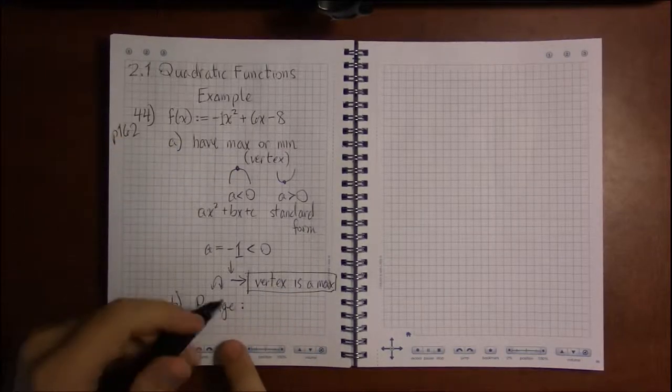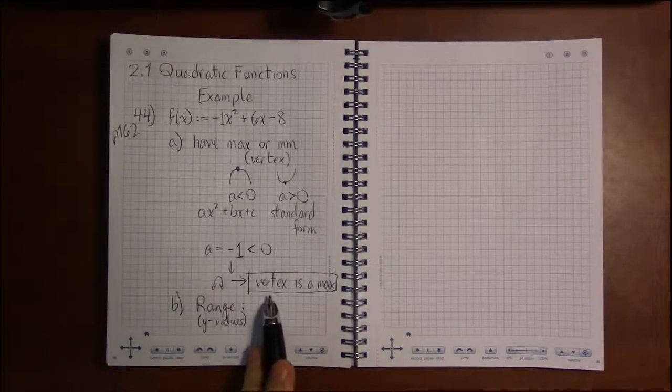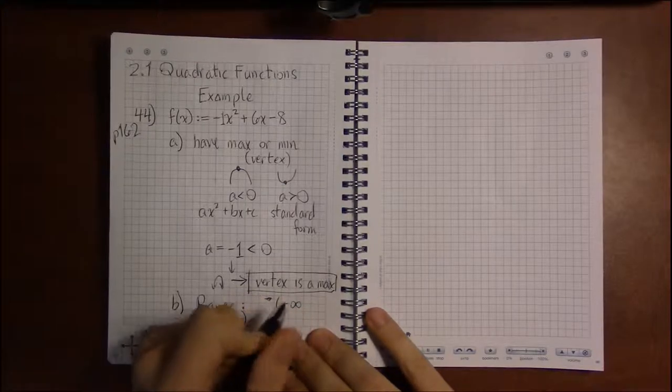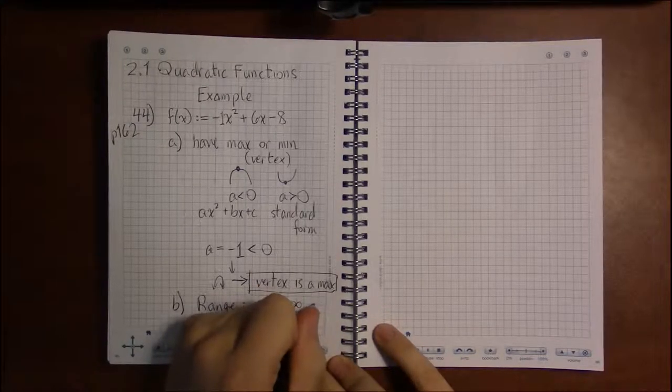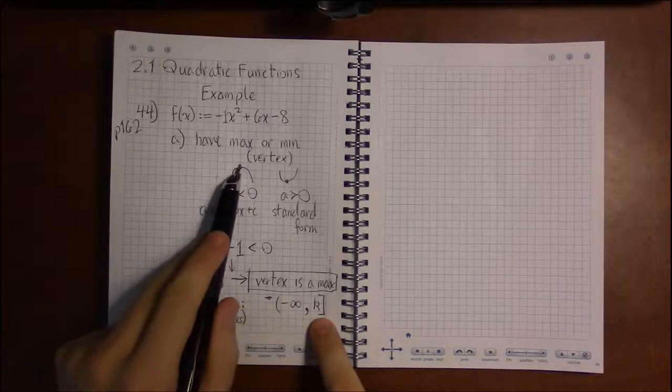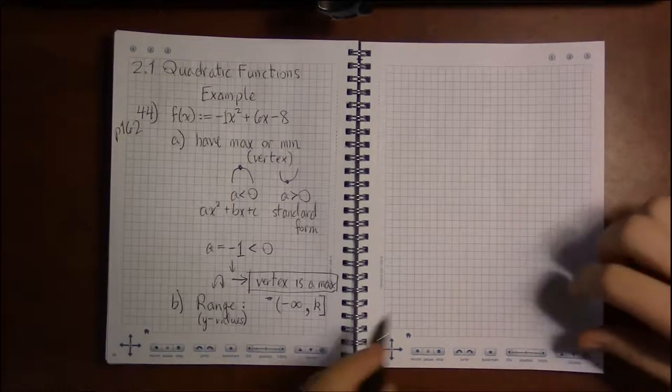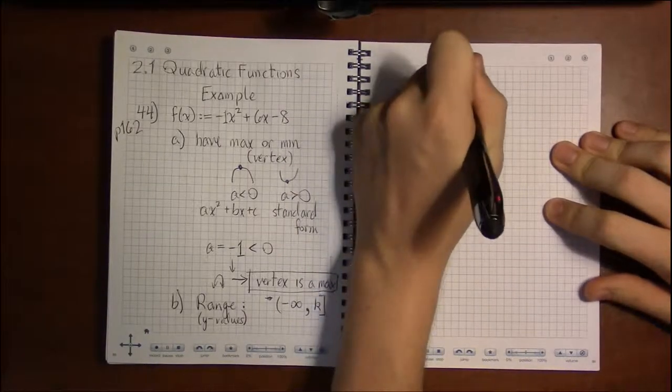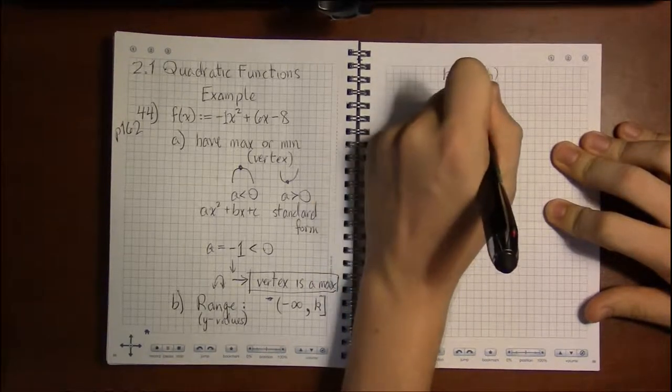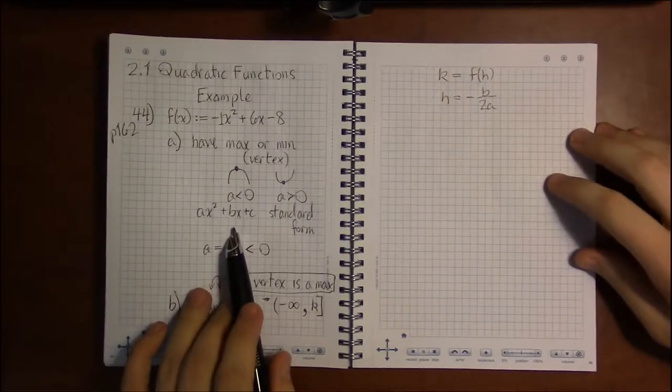The highest y value is simply the y value of the vertex, because the vertex is this highest point and range deals in y values. Because the vertex is a max, the range is going to be from minus infinity all the way up to k, and it will include k, the y coordinate of the vertex. We need to find k. To find k we need to know what h is, because k is simply f of h. H for a parabola is minus b over 2a.